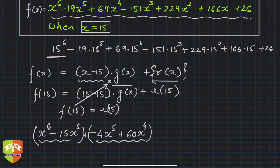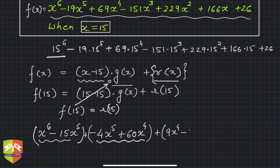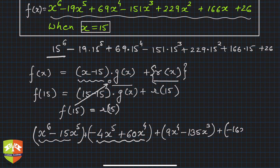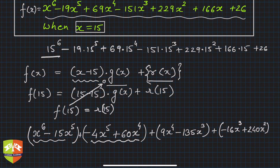For minus 4 x to the power 5, I need plus 60 x to the power 4, because I can take x to the power 4 common and again get x minus 15 from those two terms. There were 69 x to the power 4, so 9 is left. For 9 x to the power 4 I need 15 times 9, which is 135 x cubed. But there were 151 x cubed, so minus 16 x cubed is left. For 16 x cubed I need 240 x squared. But only 229 x squared were there, so I need to subtract 11.